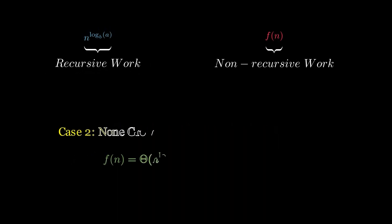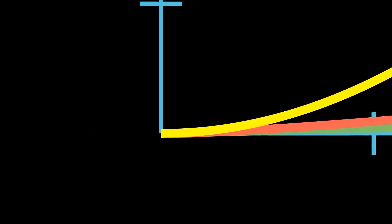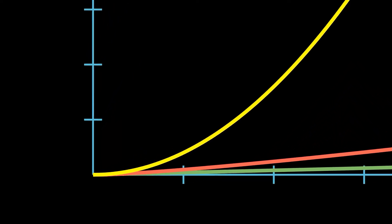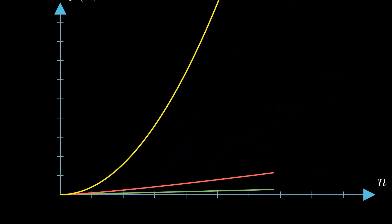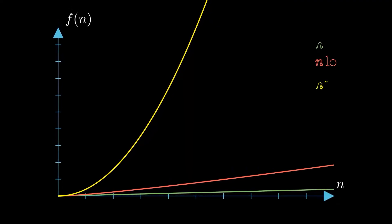In case 2, the situation arises where the non-recursive part and the recursive part either grow at equal rates or do not grow at least polynomially faster. This happens when the function contains a logarithmic factor. A function with a logarithmic factor grows faster than a linear function, but not as rapidly as polynomial functions. This places it in a unique growth category, intermediate between linear and polynomial rates, and is closer to the linear one.